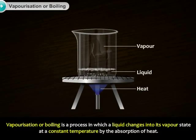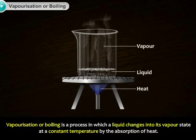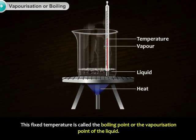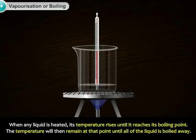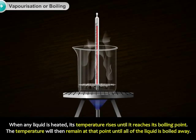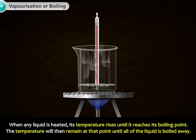Vaporization or boiling is a process in which a liquid changes into its vapor state at a constant temperature by the absorption of heat. This fixed temperature is called the boiling point or the vaporization point of the liquid. For example, the vaporization of water into steam at 100 degrees Celsius. When any liquid is heated, its temperature rises until it reaches its boiling point. The temperature will then remain at that point until all of the liquid is boiled away.